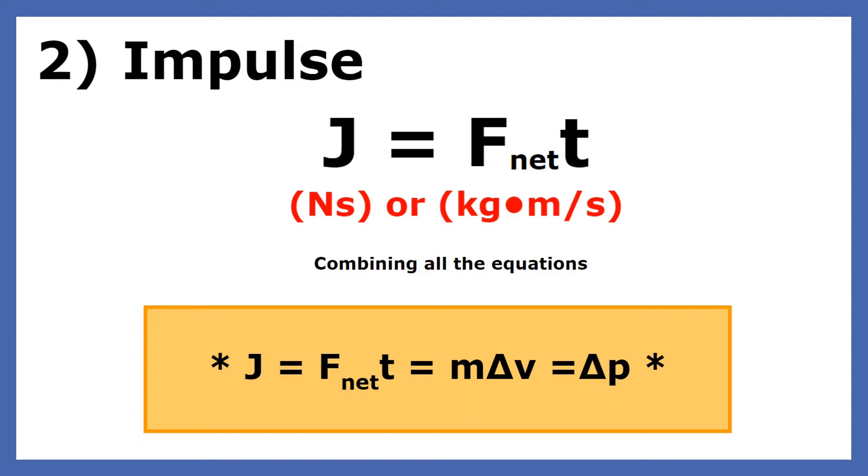Increasing the force and or contact time will cause an increase in momentum. The product of force and time is called impulse. The symbol for impulse is J and its units are Newton seconds or kilogram meters per second. When we combine all the momentum equations, we get the following equation.